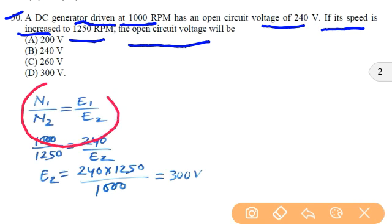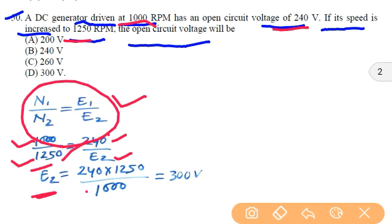So we have the relation as N1 by N2 equal to E1 by E2. Here N1 is 1000, N2 is 1250, and E1 is 240. So by putting this N1 as 1000, N2 is 1250, that equal to 240 by E2. So E2 will be 240 into 1250 divided by N1, 1000. So that equal to 300 volt. So option D will be the correct answer.